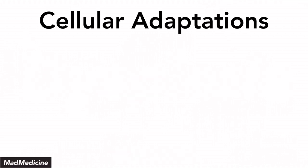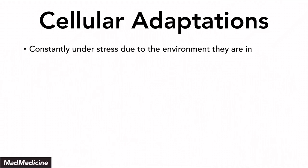Let's discuss the cellular adaptations that occur that will lead to dysplasia. Normally, the cells in our body are constantly under a lot of stress due to the environment they are in. One example of this type of stressful environment would be the stomach lining that's constantly being eroded due to stomach acid interacting with the lining. But our cells have generated a way to adapt to that stressful situation at the cellular level.